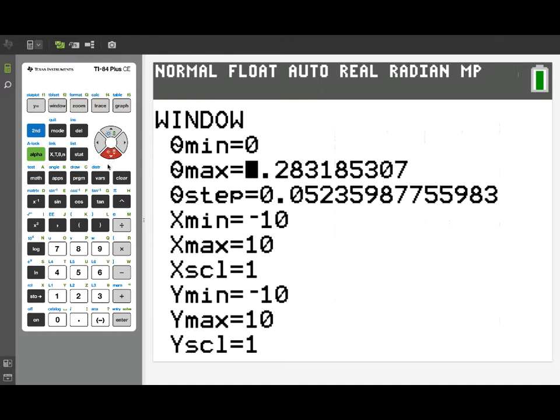Now in the problem, the minimum and maximum values were 0 and pi over 2. We've already got 0 in for theta min. We're going to change theta max to pi over 2. We can enter it using the pi symbol, and it'll convert it to a decimal approximation.